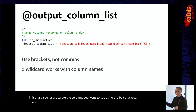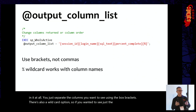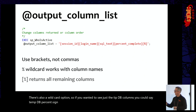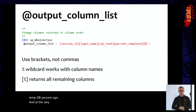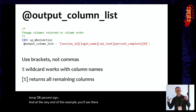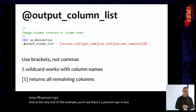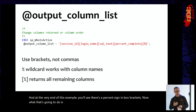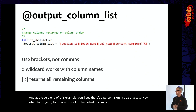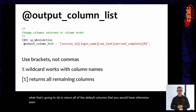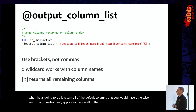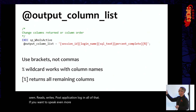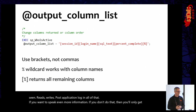There is also a wildcard option. If you want to see just the tempdb columns, you could say tempdb percent sign. At the very end of the example, you'll see a percent sign in box brackets — that is going to return all of the default columns you would have otherwise seen: reads, writes, host, application, login, all of that, if you want to see even more information. If you don't do that, you will only get the columns that you specify.